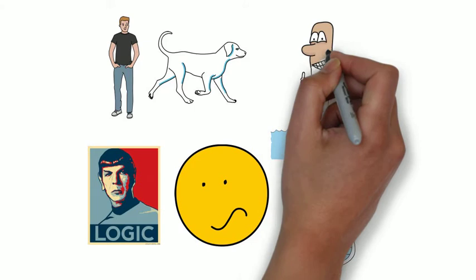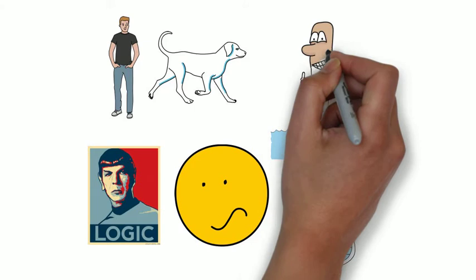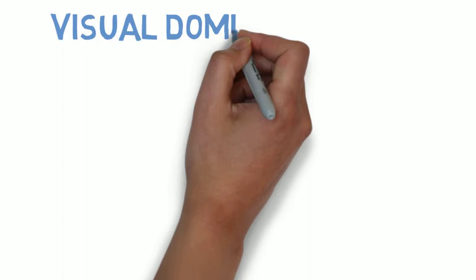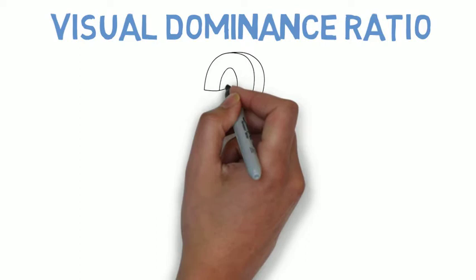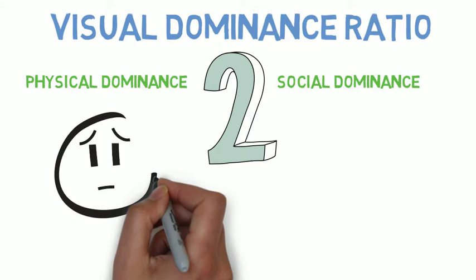So instead I'm going to focus on a few of the examples in the book that I found the most interesting. Let's get started. The first idea that I want to share with you is known as the visual dominance ratio. In modern human society there are two kinds of dominance: one is physical dominance and the other is social dominance. Physical dominance of course aims to influence others through fear and aggression, but social dominance is more based on admiration.